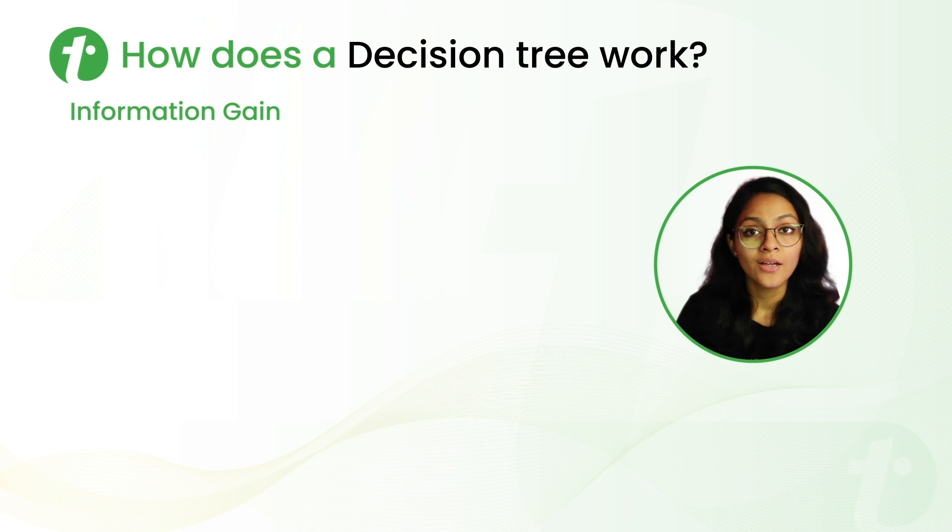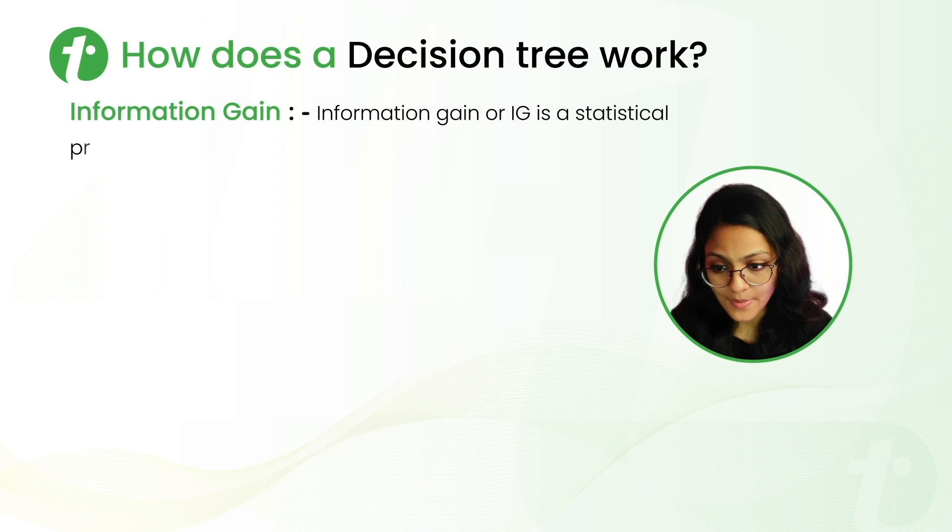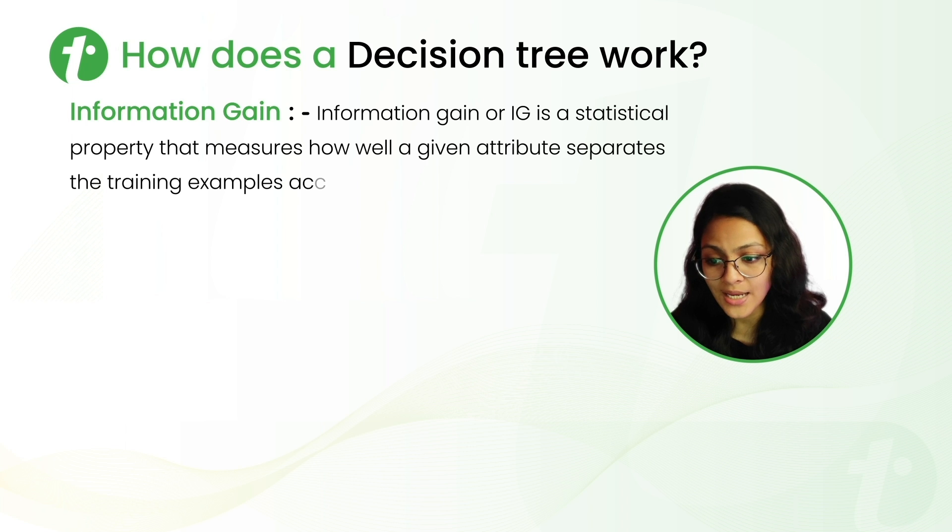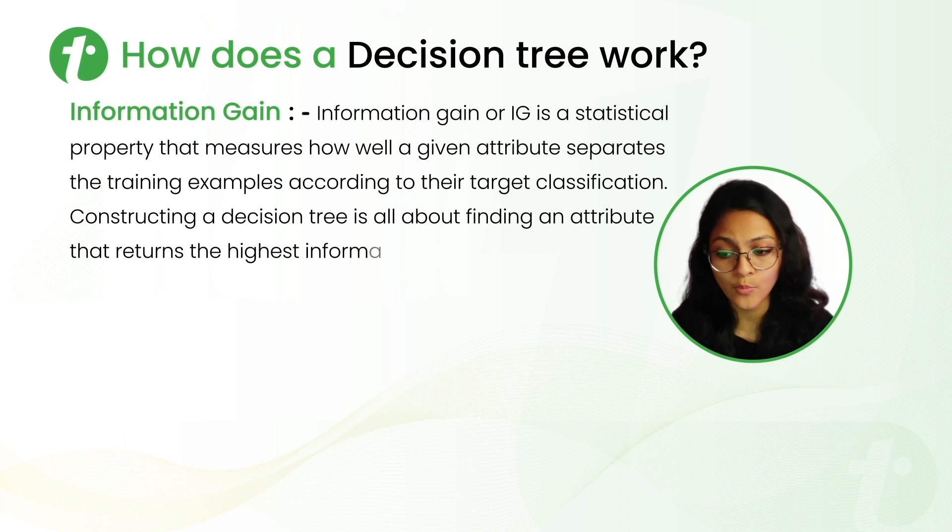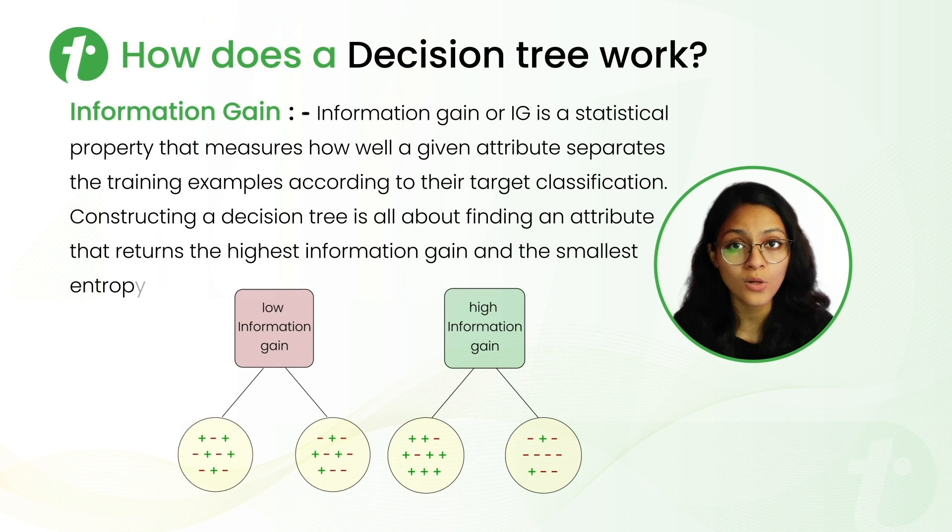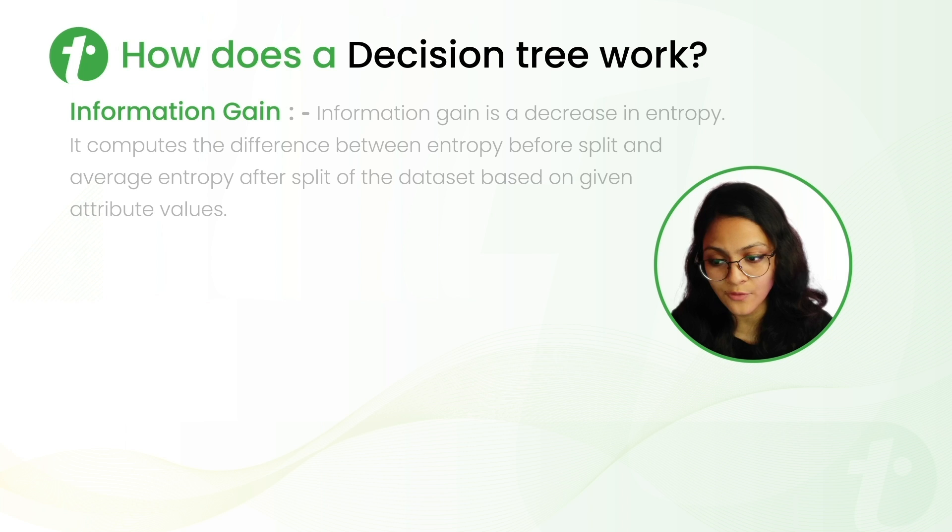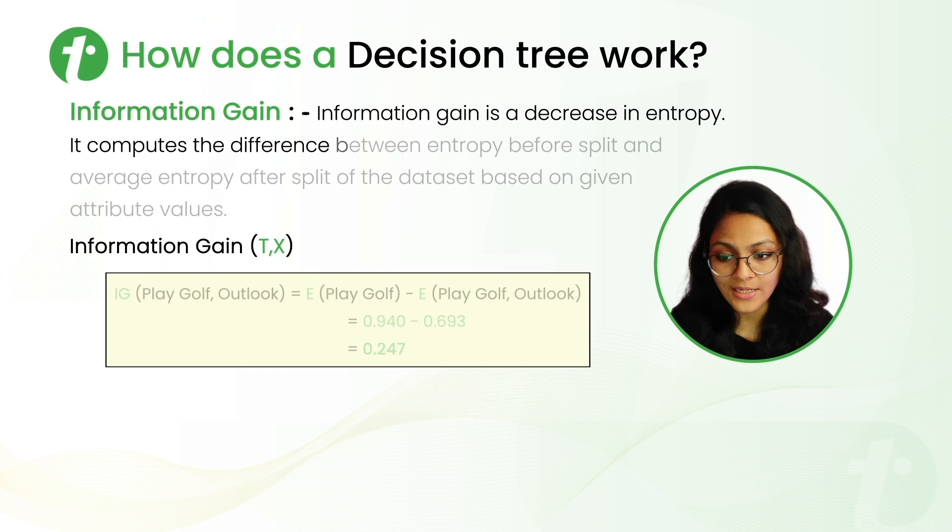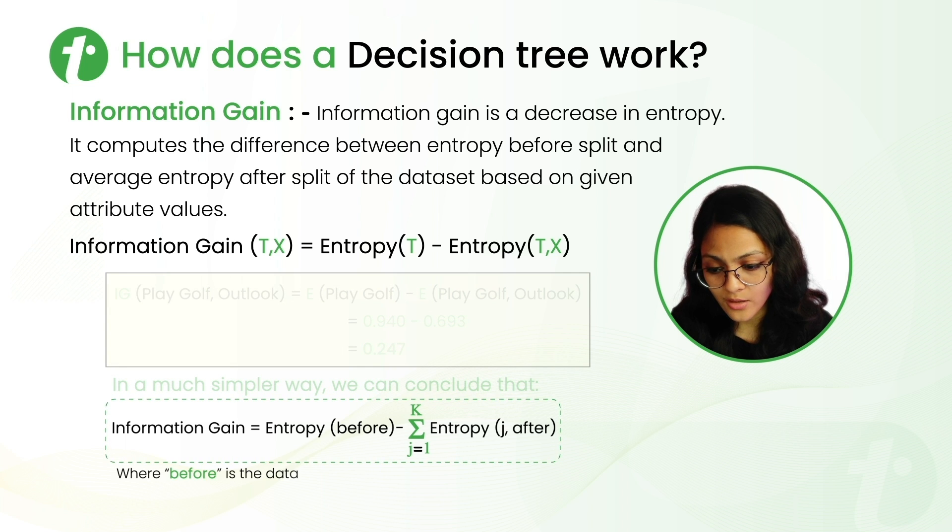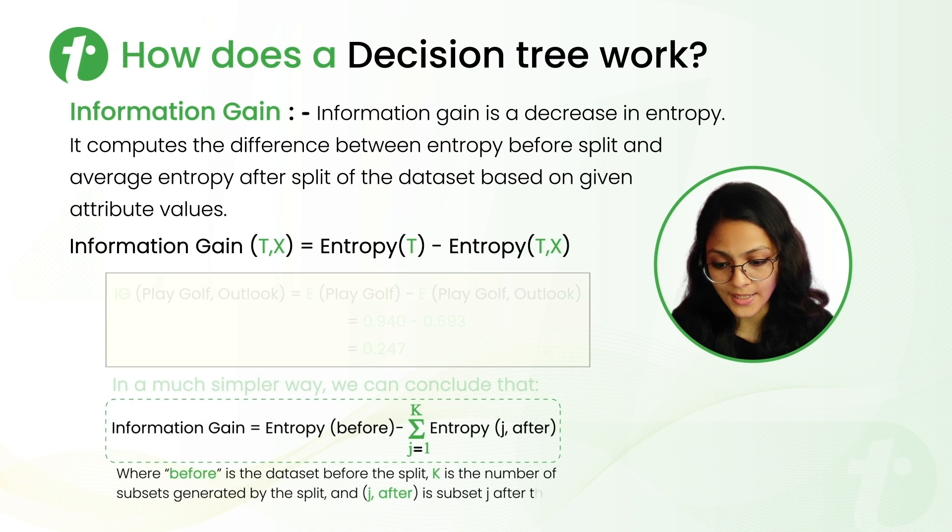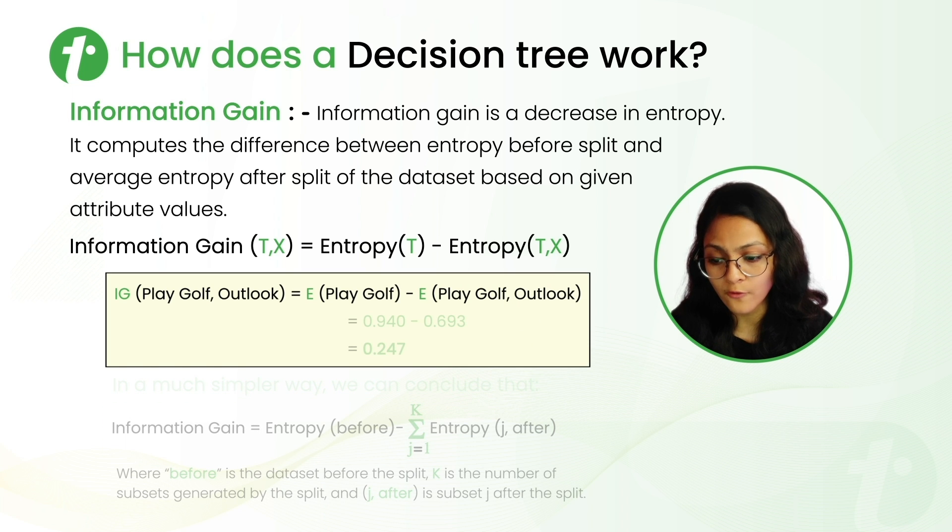Now, next is information gain. Information gain is a statistical property that measures how well a given attribute separates the training examples according to their target classification. Constructing a decision tree is all about finding an attribute that returns the highest information gain and lowest entropy. Now, let's see the mathematical representation of the information gain. As I told you before also, information gain is the decrease in entropy. So, mathematically, it is represented as entropy before minus sigma J equals 1 to K entropy J after, where before is the dataset before a split, K is the number of subsets, and J is a subset after the split. So, for the previous example, the information gain of play golf for attribute Outlook is coming out 0.247.